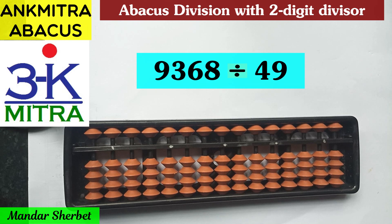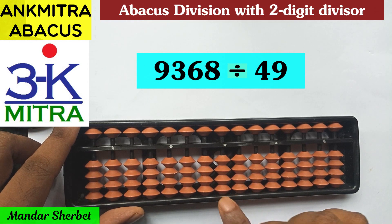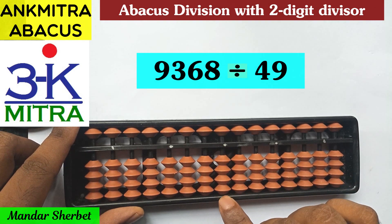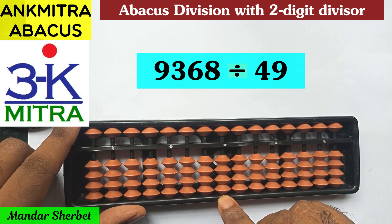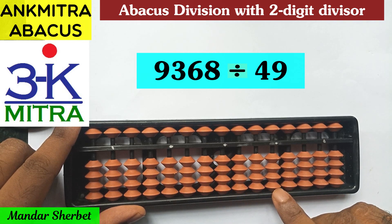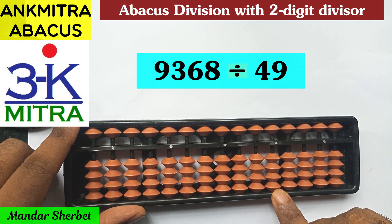So the number is 9368, which is to be divided by 49. As with our regular division procedure, we need to consider the question set separately from the answer set. This middle white dot is the unit's place of our answer set, and the next white dot on the right is the unit's place of the question set.